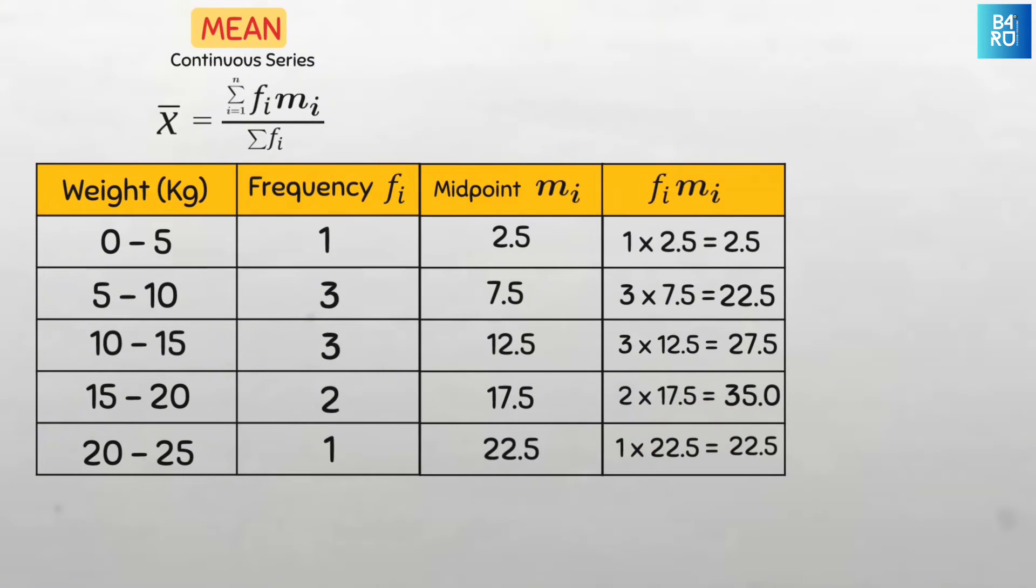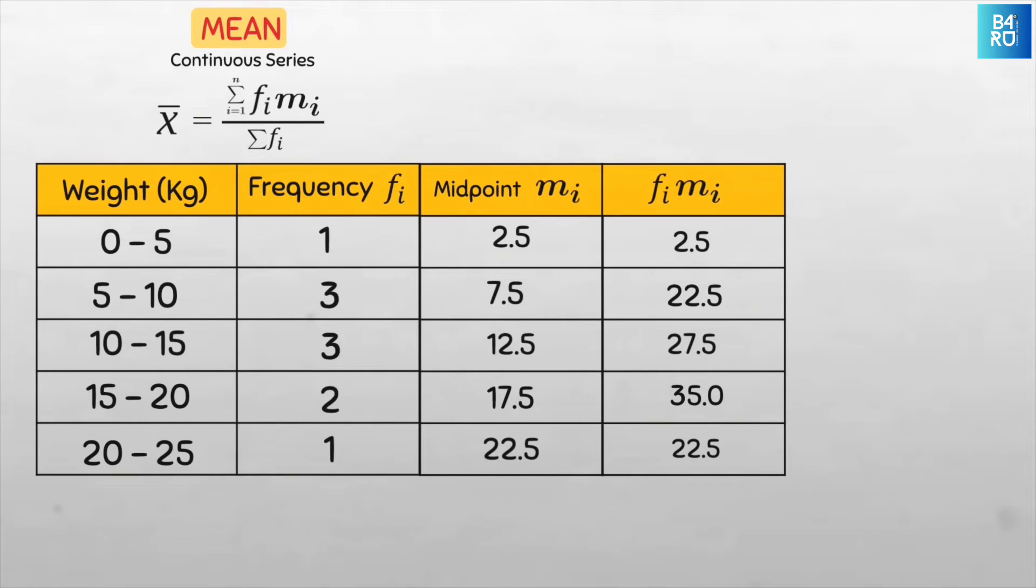Now that we have all the products of the frequencies and midpoints, we just need to sum them to complete the numerator. So the sum of the product of the frequencies and the midpoints of each class, sigma f sub i m sub i, is equal to 2.5 plus 22.5 plus 27.5 plus 35 plus 22.5 and this equals 110.